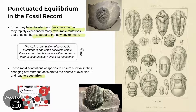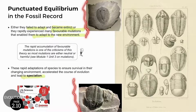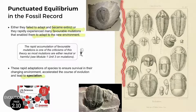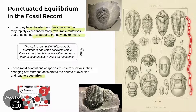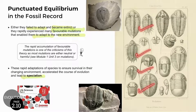Gould and Eldridge questioned Darwin's gradualism in the evolution of organisms like trilobites, which were the focus of some of their studies. Trilobites changed minimally over many periods of time. They didn't evolve into different animal groups, but disappeared in the fossil record still recognizable as trilobites, despite millions of years of evolution.